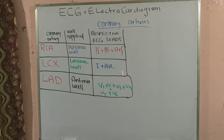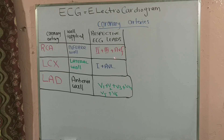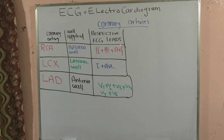There is a very interesting aspect of knowing the coronary arteries: there are certain sets of ECG leads which represent each particular wall on the ECG paper. If we can identify changes in a particular set of ECG leads, we can identify which wall is affected and track it back to the culprit coronary artery. So just by looking at a set of ECG leads, we can identify the culprit coronary artery.